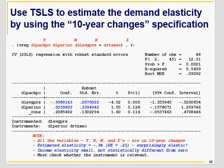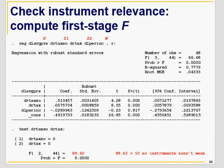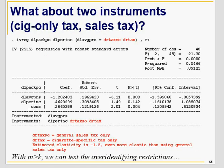For the first stage of the instrumental variable estimation: when only sales tax is used as an instrument, the F-statistic is greater than 10. When income per capita and sales tax are used, the F-statistic is again greater than 10. When both sales tax and cigarette-specific tax are used along with income per capita, the F-statistic is again greater than 10. So in all three cases, instruments are strong.